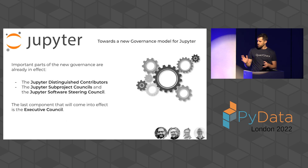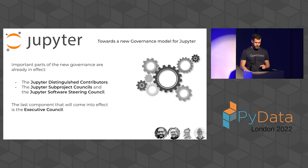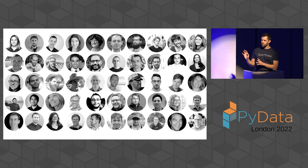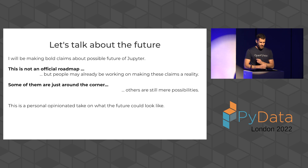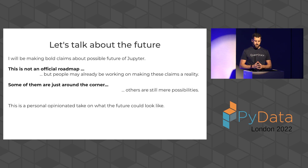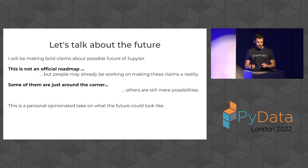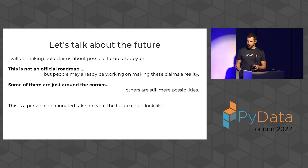As I was showing all these slides, I showed pictures of the main people involved in these aspects — and that's only a small portion of the Jupyter development community. Now let's talk about the future. Here are the rules of the game: I'll be making some bold claims about possible futures for Jupyter, but it's not an official roadmap. Some of them are just around the corner, but others are mere possibilities, and my claims are going to get bolder and bolder. It's just an opinionated take.